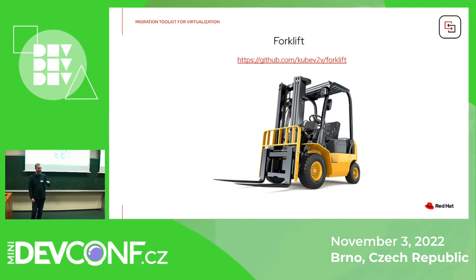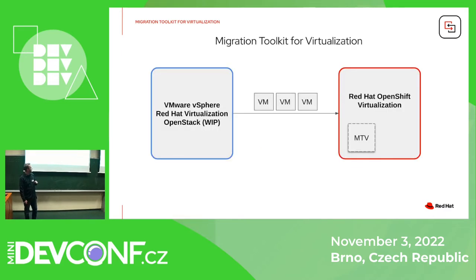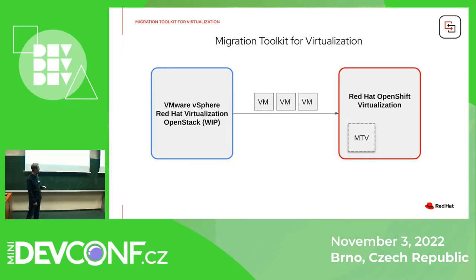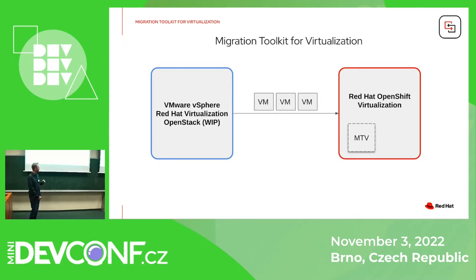The previous engineers had very interesting naming systems. What it does: either from VMware vSphere or Red Hat Virtualization, it migrates VMs to OpenShift. Currently we have a few engineers working to also include OpenStack — work in progress, hopefully finished in a few months.